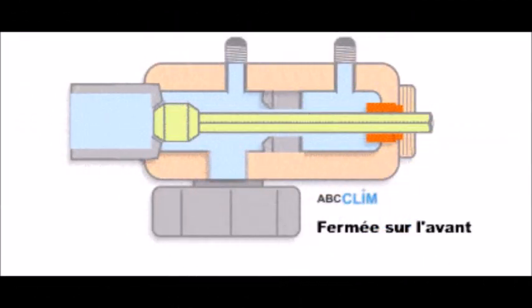Enfin, nous avons la dernière position : la vanne est en position cale avant. Le pointeau est donc en position avant sur le siège. Le carré de manœuvre a été vissé à fond, c'est-à-dire que la tige a été serrée dans le sens horaire, ce qui a provoqué un déplacement du pointeau de la droite vers la gauche. Dans cette position, la tuyauterie est obturée, c'est-à-dire que le fluide frigorigène ne peut plus circuler dans notre installation frigorifique.